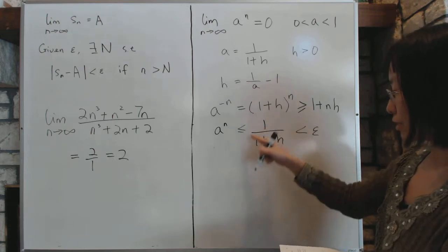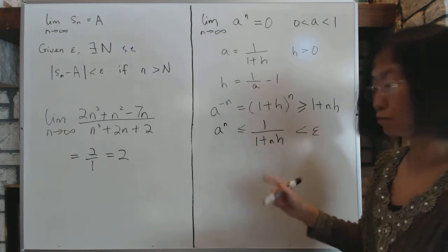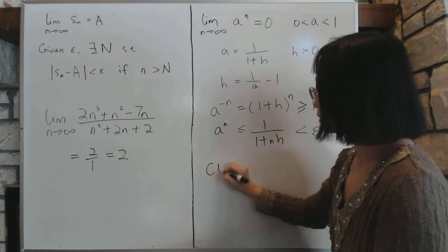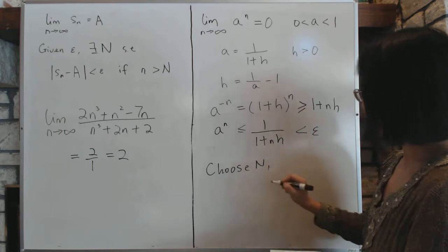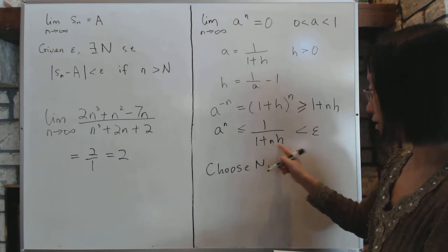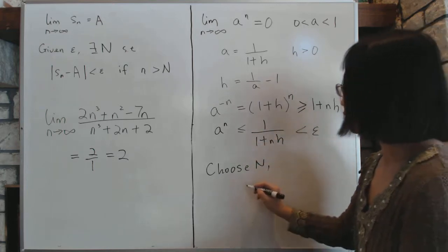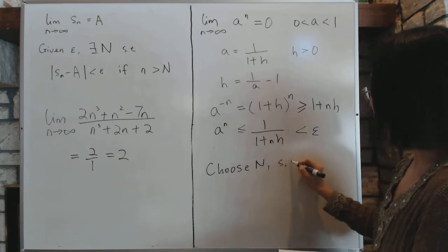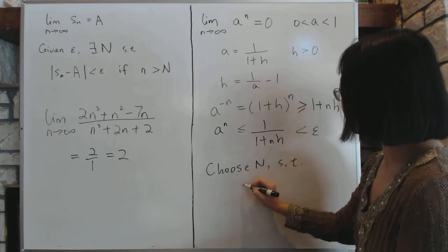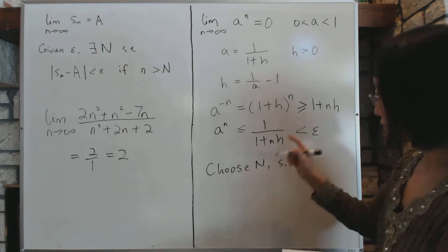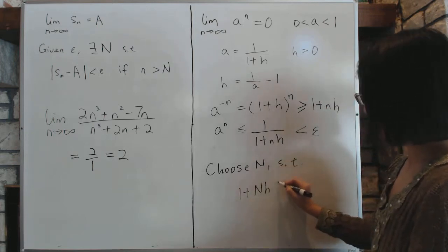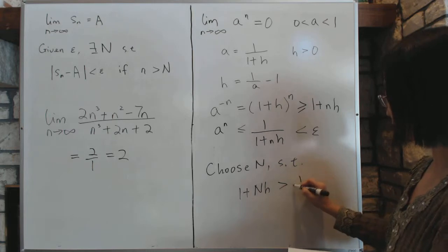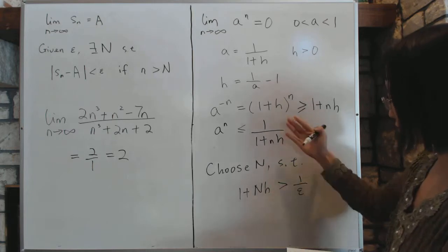which is quite easy to do. And then we can isolate to see where n is, which means we will choose the big N, big N such that this relationship happens. Choose big N such that, we'll flip it around. So it has 1 plus big N times h is bigger than 1 over epsilon, okay, because we're flipping it around.